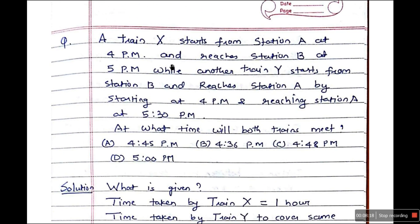The next problem: train X starts from station A at 4 pm and reaches station B at 5 pm, while train Y starts from station B at 4 pm and reaches station A at 5:30 pm. At what time will both trains meet? Options: A) 4:45 pm, B) 4:36 pm, C) 4:48 pm, D) 5 pm.